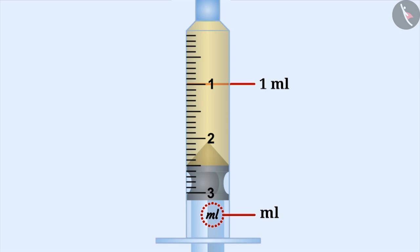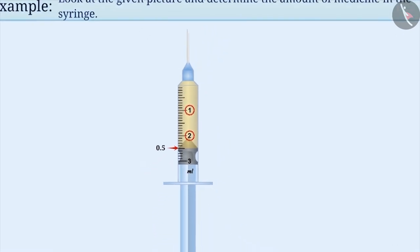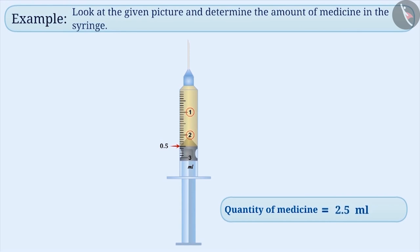You can also see that each milliliter is divided into 10 equal parts. Therefore, one part of the milliliter is equal to one tenth ml. Since there are two wholes and five tenths, the amount of medicine in the syringe will be 2.5 ml.